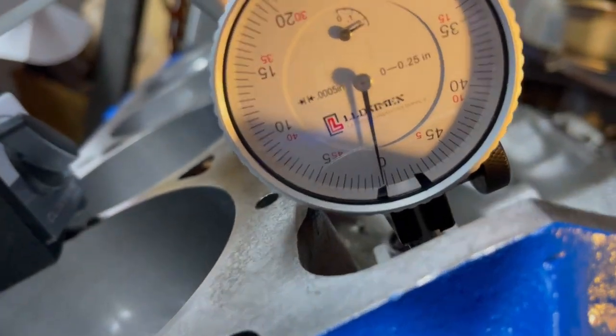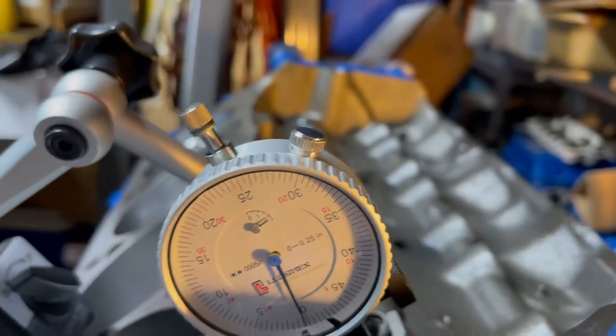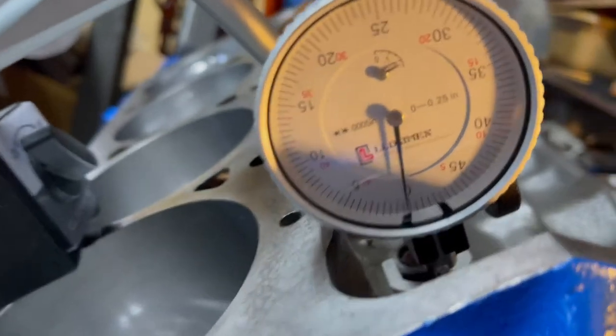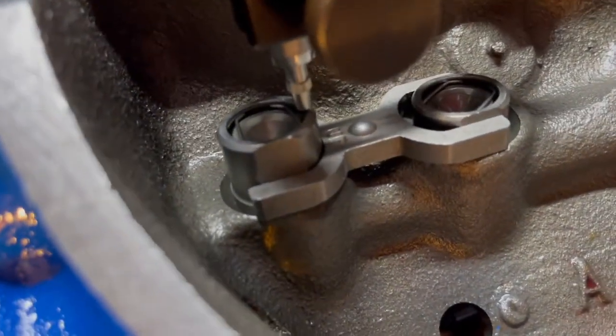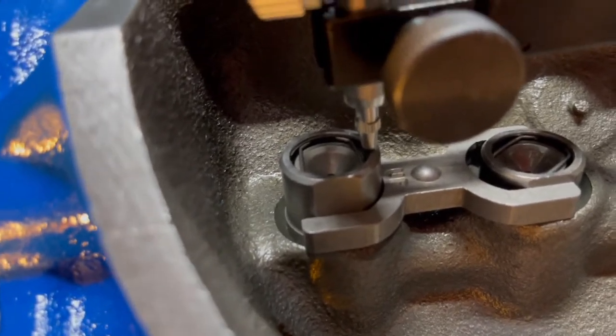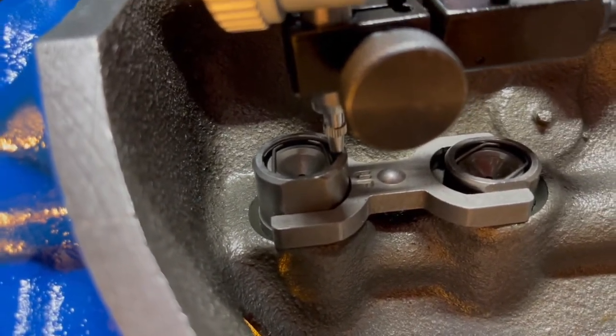So what I did was I found the highest point of the intake lobe. So I put my lifters in there and I also put the dog boot in there so it won't rotate and mess up my measurement.